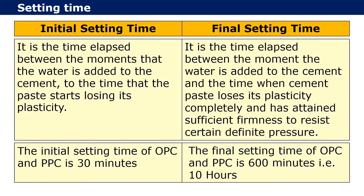The initial setting time of both OPC and PPC is the same at 30 minutes. The final setting time of both OPC and PPC is 600 minutes, i.e. 10 hours. However, even after OPC and PPC attain the same final setting time, OPC attains 3-day, 7-day, and 28-day strength faster than PPC. Therefore, OPC is recommended in projects where de-shuttering is to be done at a faster pace.